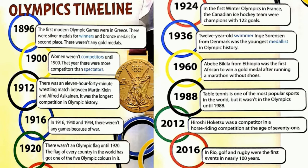1988. Table tennis is one of the most popular sports in the world, but it wasn't in the Olympics until 1988. 2012. Hiroshi Hoketsu was a competitor in a horse riding competition at the age of 71.